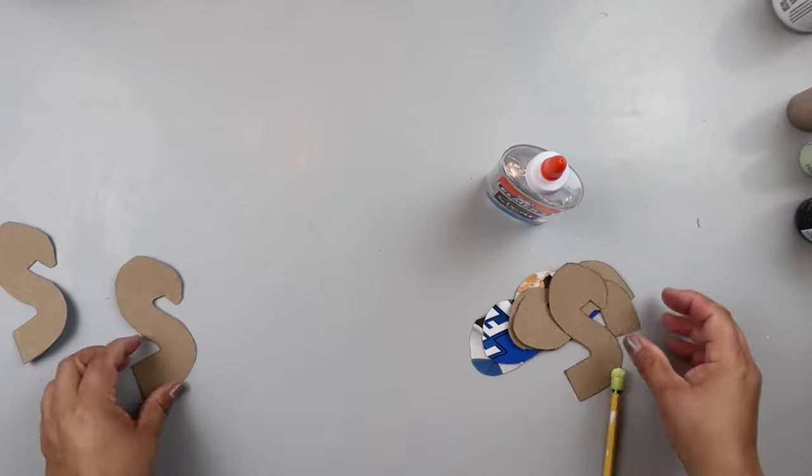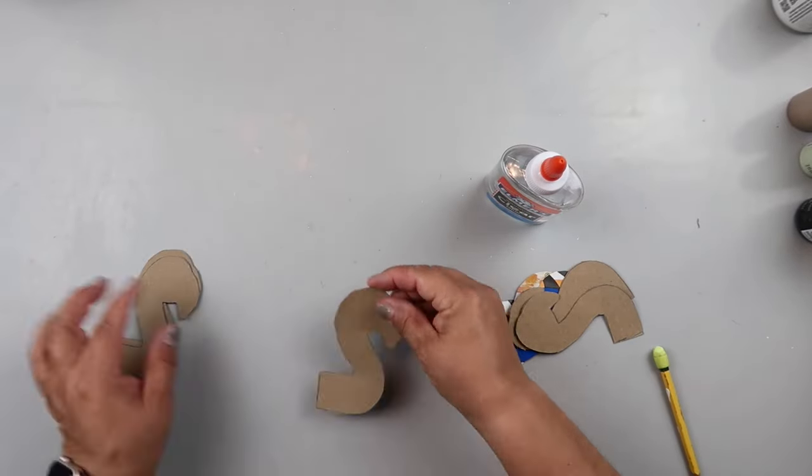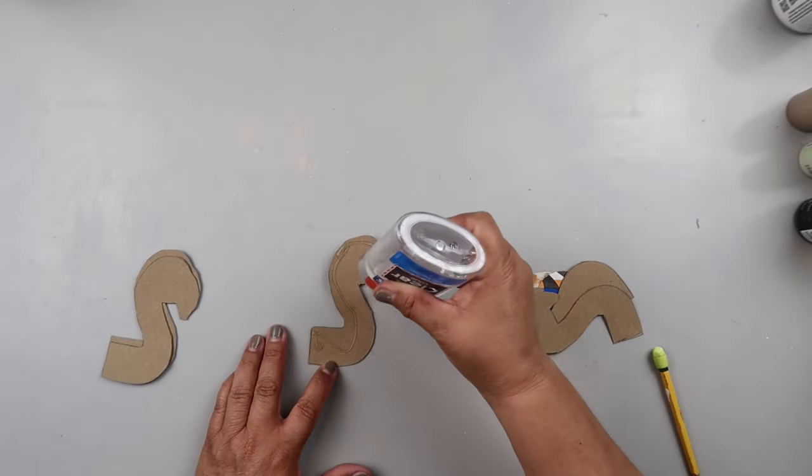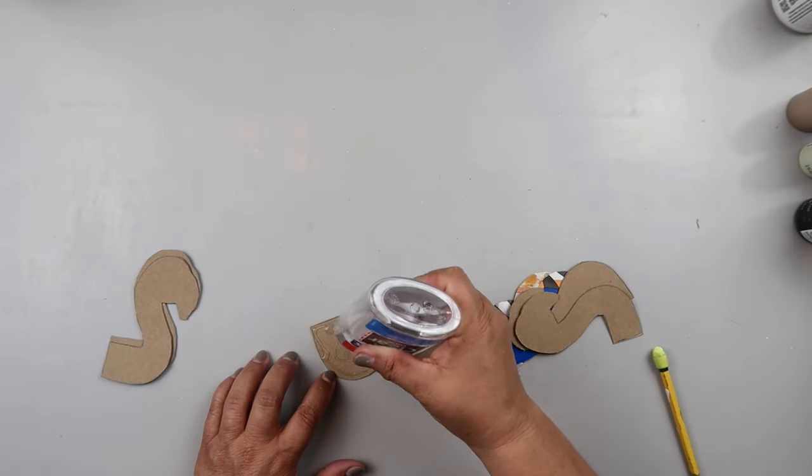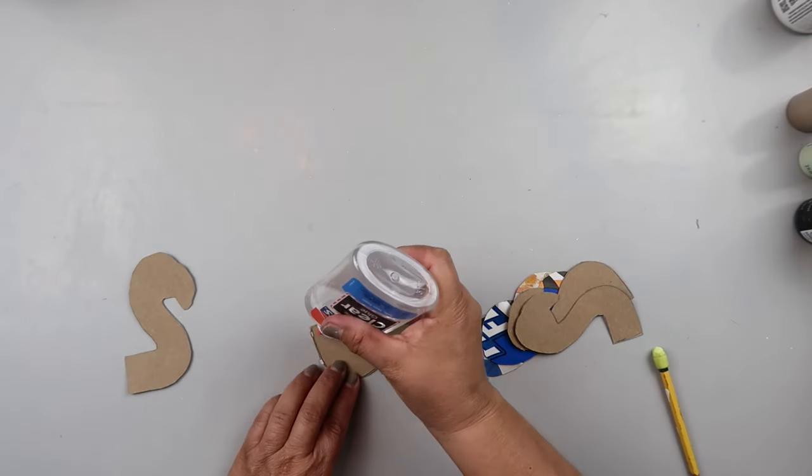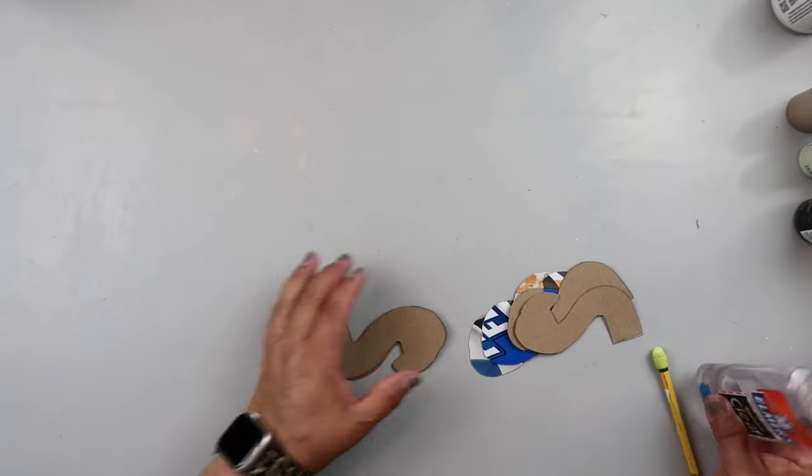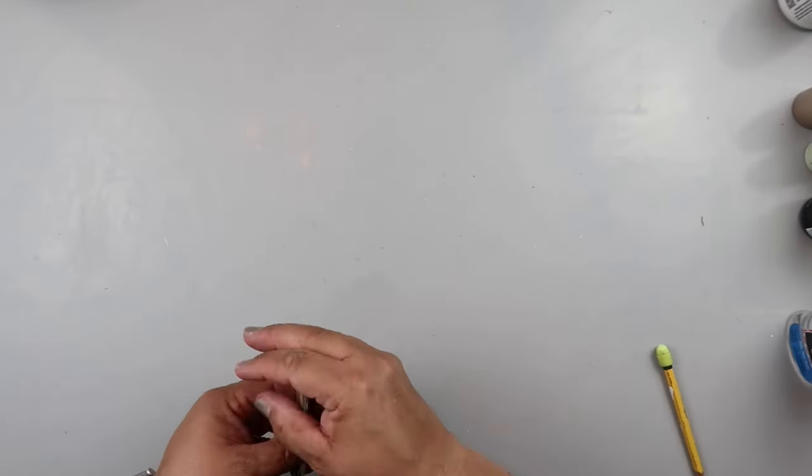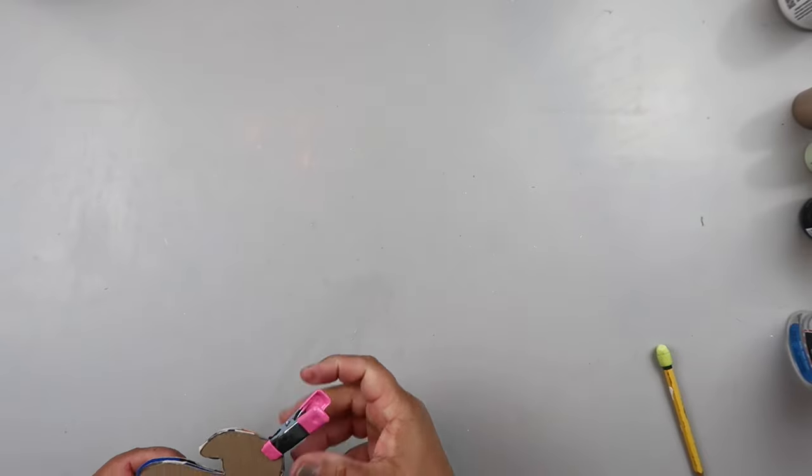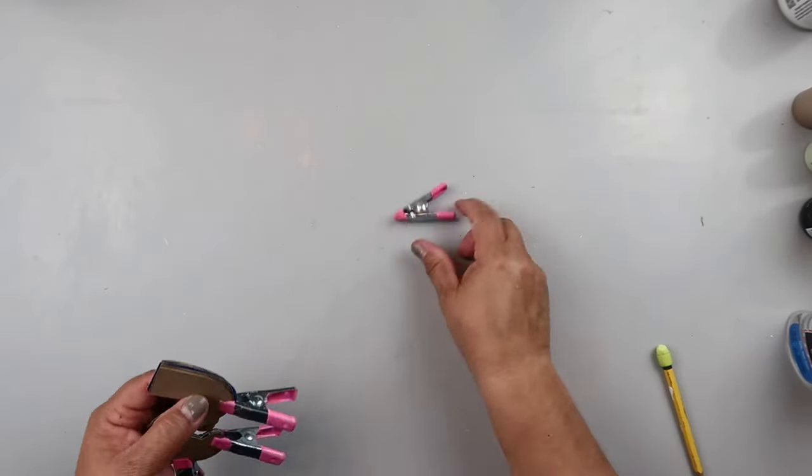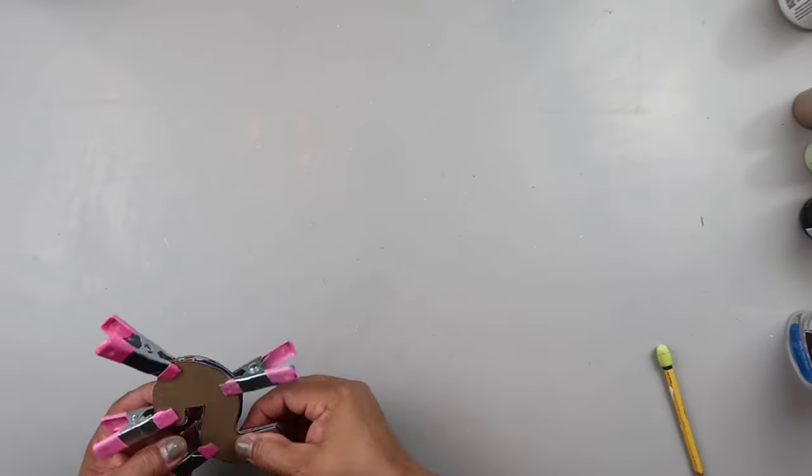Then I just used some Elmer's glue and I'm gluing them all together. You could also use wood glue because this is fiber from a tree, but I am just using that wood glue and it works fine. Once I got to the end I did use those little pink clamps from Dollar Tree to hold it together while it dried.